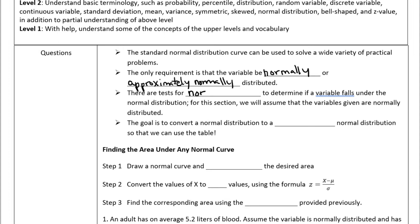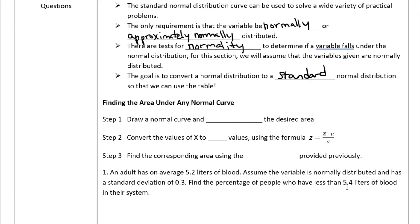In the next lesson we'll talk about tests for normality to determine if a variable falls under the normal distribution. The goal here is to convert a normal distribution to a standard normal distribution so we can use the table. Let's quickly review the procedure for finding the area under a normal curve.